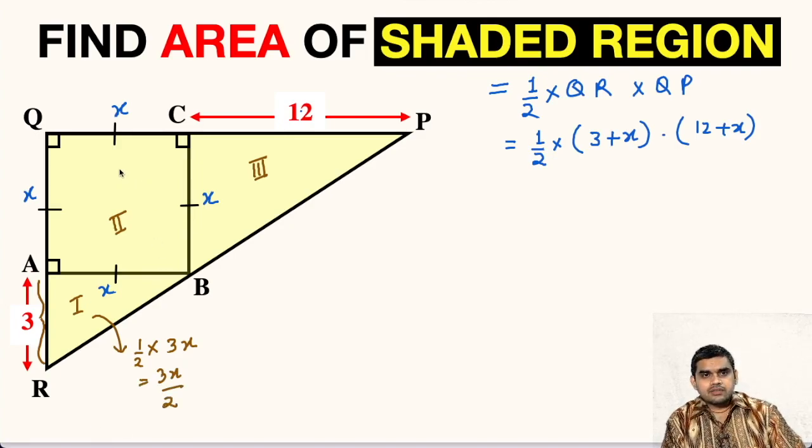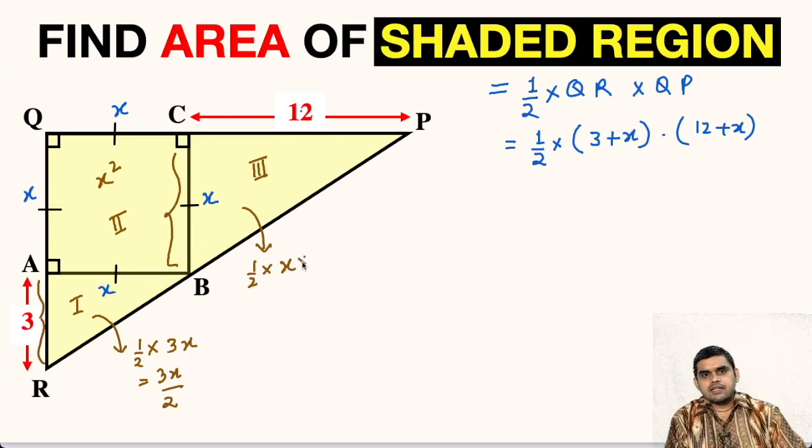Area of this square, the second figure will be X square. Area of this third figure, that means this right triangle will be half times, let us take DC as the base. X times the altitude that is 12 here. We can cancel this by 6, so this will be 6X.